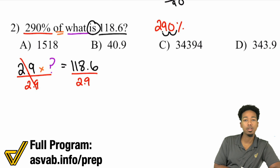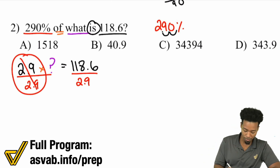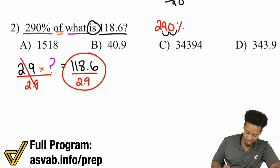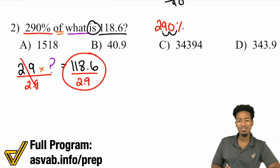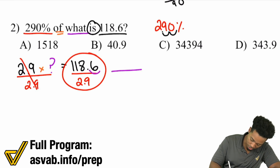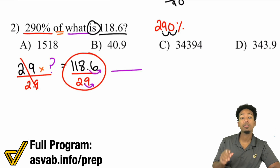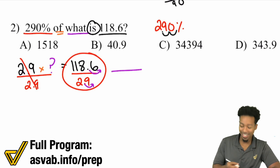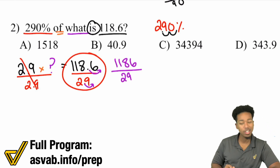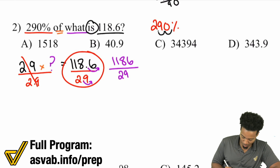Dividing both sides by 2.9 will cancel it out — multiplying by 2.9 and dividing by 2.9 cancels right out. My job is to figure out 118.6 divided by 2.9. Remember, we're dividing by a decimal, and I don't like seeing that. So the easy way is to move those decimal places to the right one time each — you have to move both at the same time. So we get 1186 divided by 29, and now we're ready to divide.